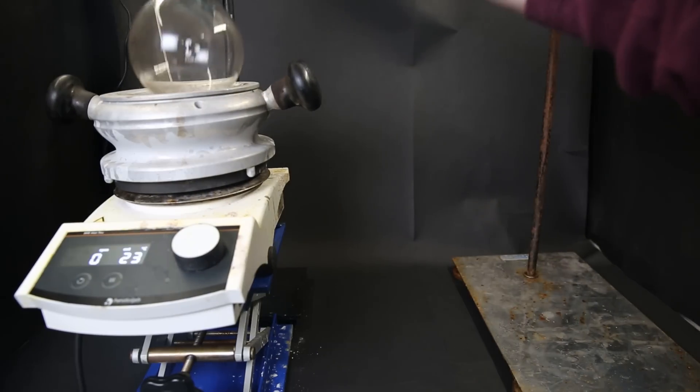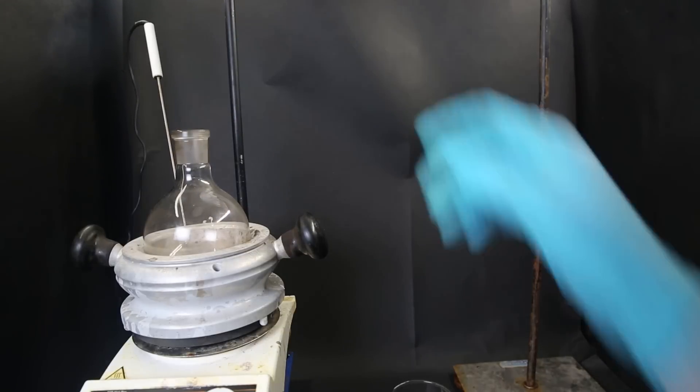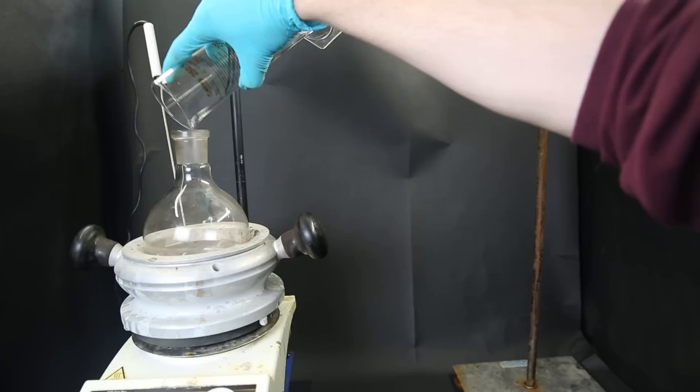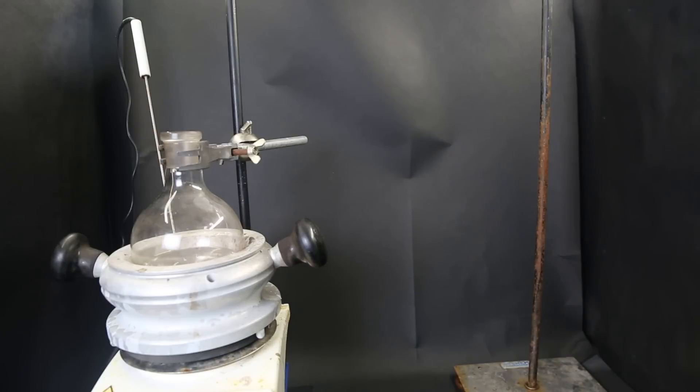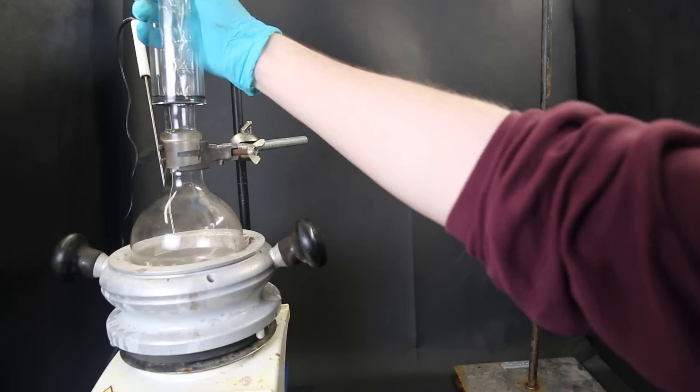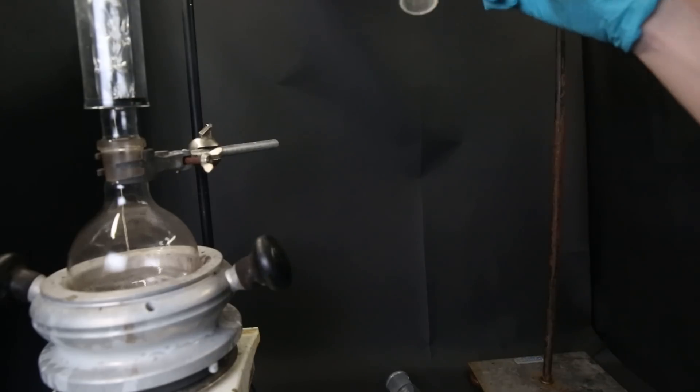So to start off, I set up a flask and drop in a stir bar. Then I add 125 ml of dicyclopentadiene to the flask. I then build a fractional distillation setup. Since the dicyclopentadiene will start to boil during the cracking, I don't want it to come over into the receiving flask.